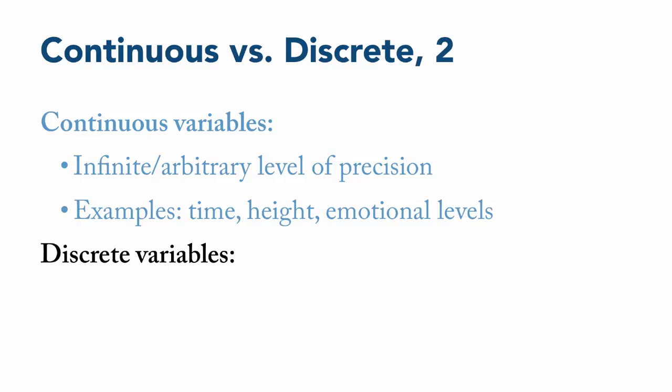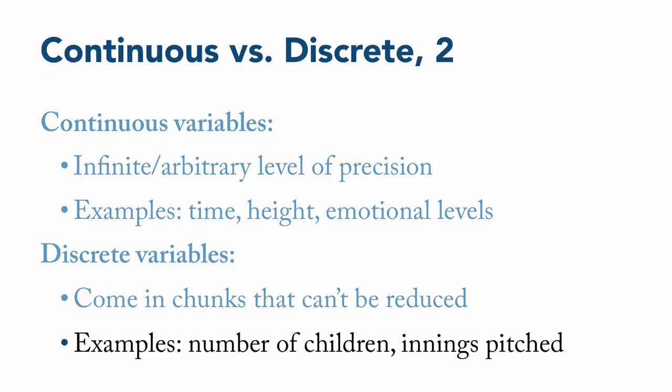Discrete quantitative variables, on the other hand, come in chunks that can't be reduced. Usually, these chunks are in whole numbers or unit values, such as number of children in a family or games won and lost. There are, however, some discrete variables that come in non-unit chunks, such as innings pitched in baseball, which come in thirds, American shoe sizes, which come in halves, and American dress sizes, which usually come in multiples of two.